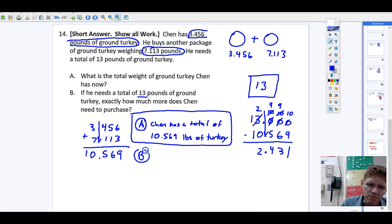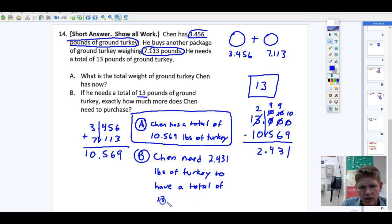So, letter B, Chen needs 2.431 pounds of turkey to have a total of 13 pounds. I'm going to box that in there so it's nice and visible. I've got sentences with periods at the end of them. I feel rather adult at this point in my life. So, there you go.